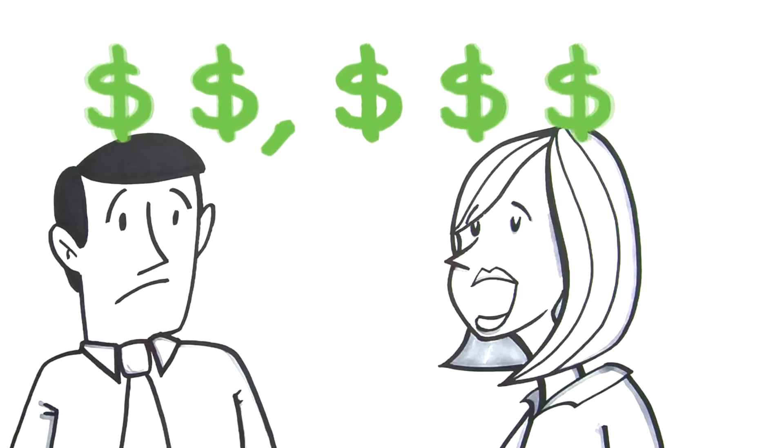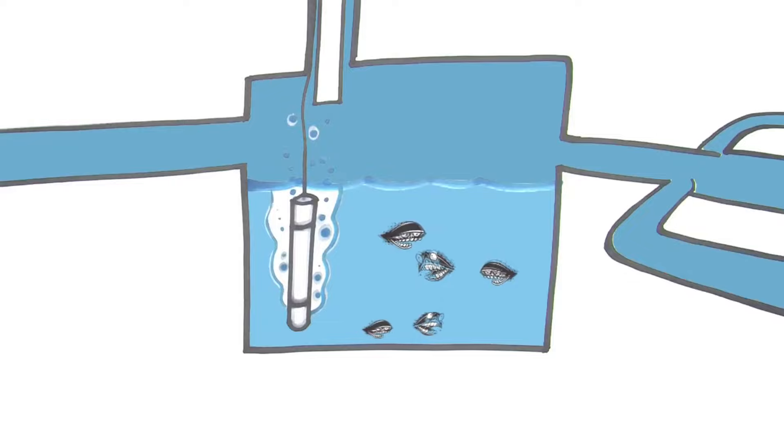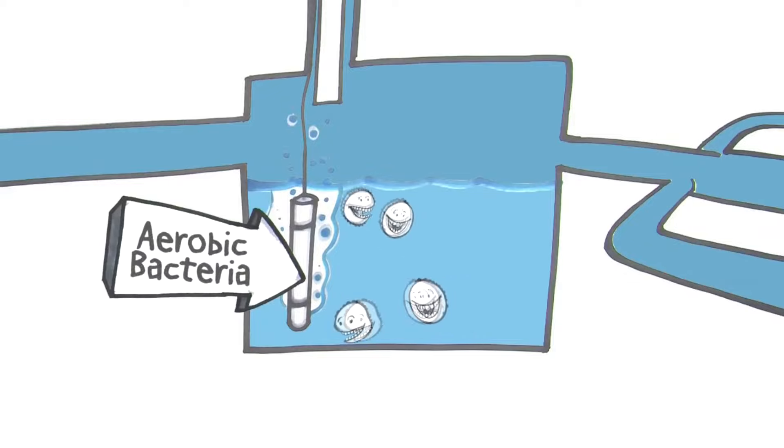Now, imagine if you could avoid this issue altogether, without having to shell out thousands of dollars for a replacement. This is where the conversion to an aerobic environment comes into play.